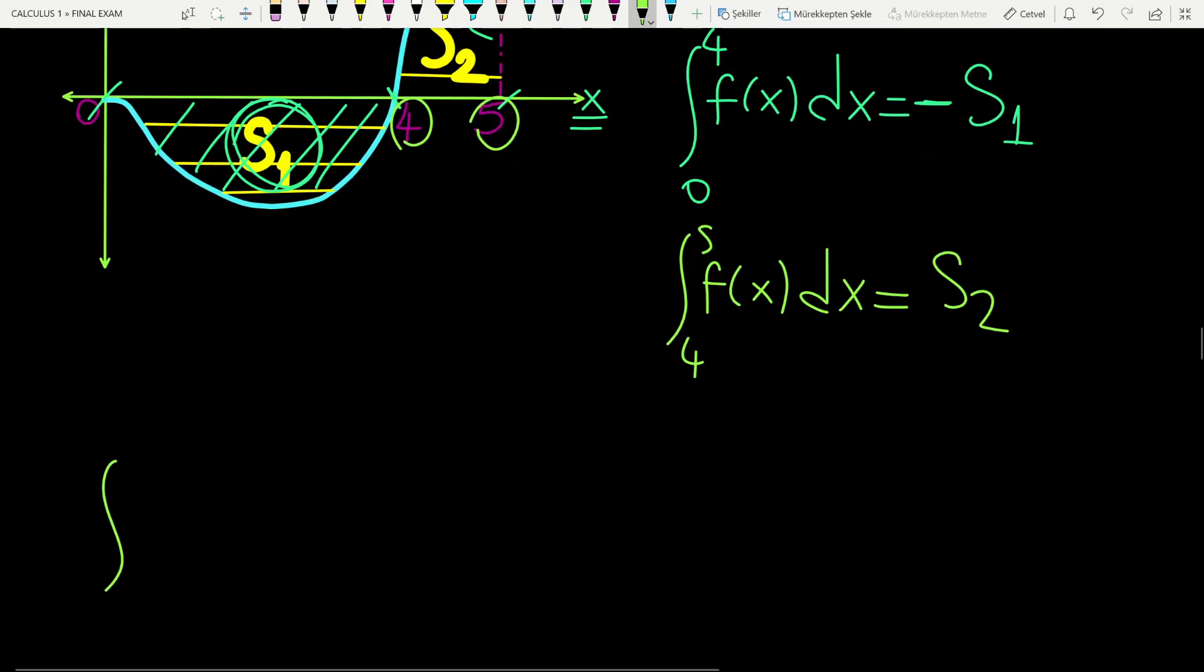The integral from 0 to 5 of f(x)dx equals the integral from 0 to 4 of f(x)dx plus the integral from 4 to 5 of f(x)dx.